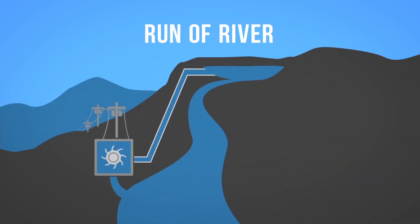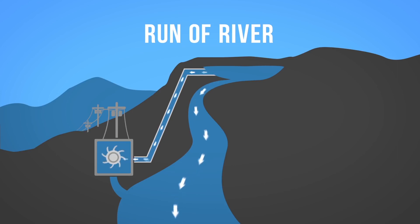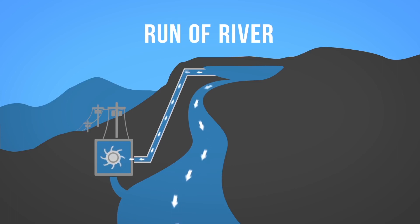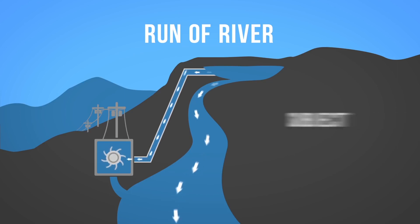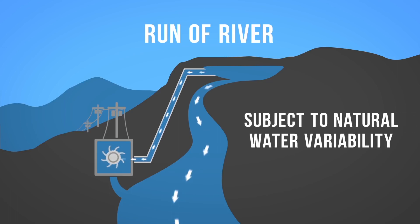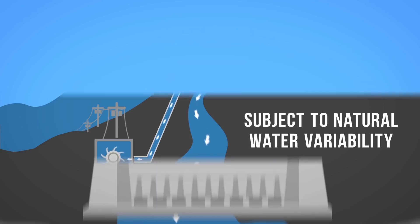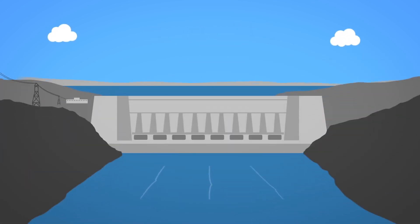The second form of hydroelectricity production is run of river hydro. Run of river still uses turbines and generators, but relies on natural water flow rates of rivers, diverting just a portion of the water through turbines. Because run of river hydro is subject to natural water variability, it is more intermittent than dammed hydro.